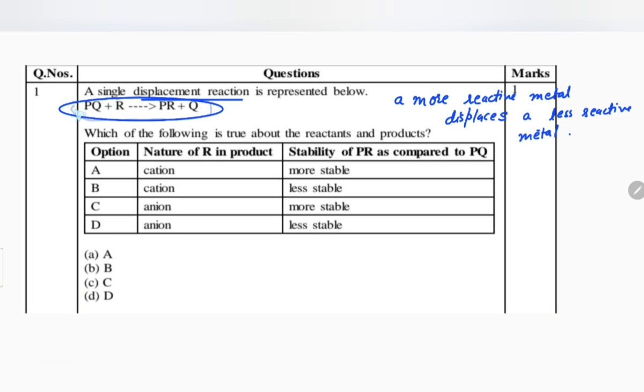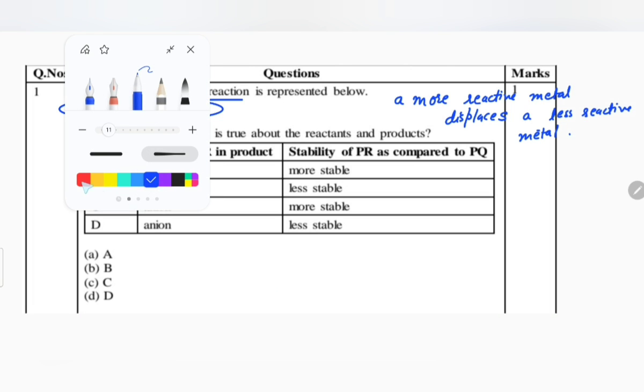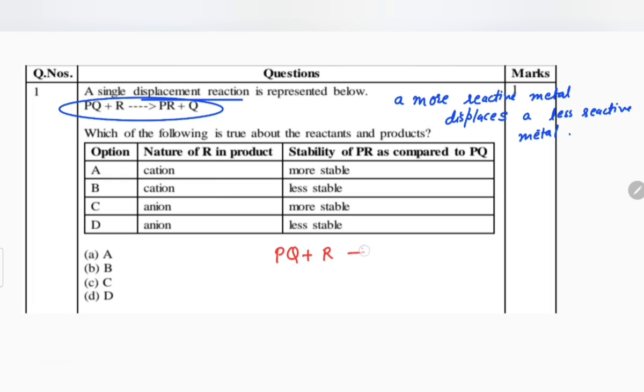Here the reaction is PQ plus R gives PR plus Q. If I write the reaction here, in PR, what is metal? P is metal. You know that always when ionic compound is formed, the left-hand ion is of metal and is positively charged, always a cation. On the right-hand side, it is non-metal and it is always an anion or negatively charged ion. So here, metal is not displaced, means R is not a metal.